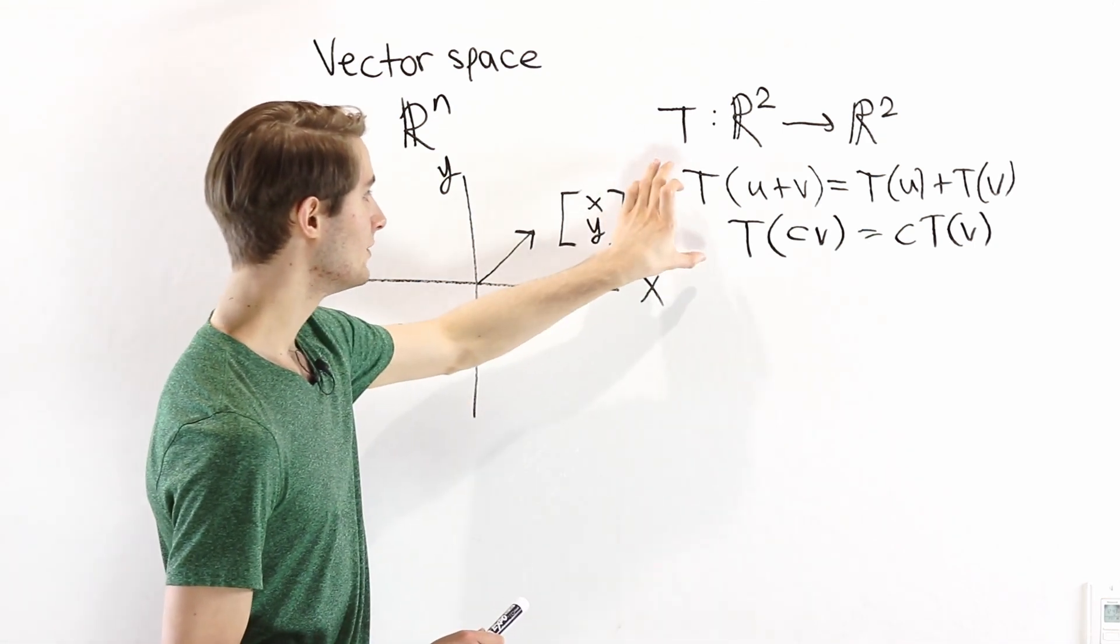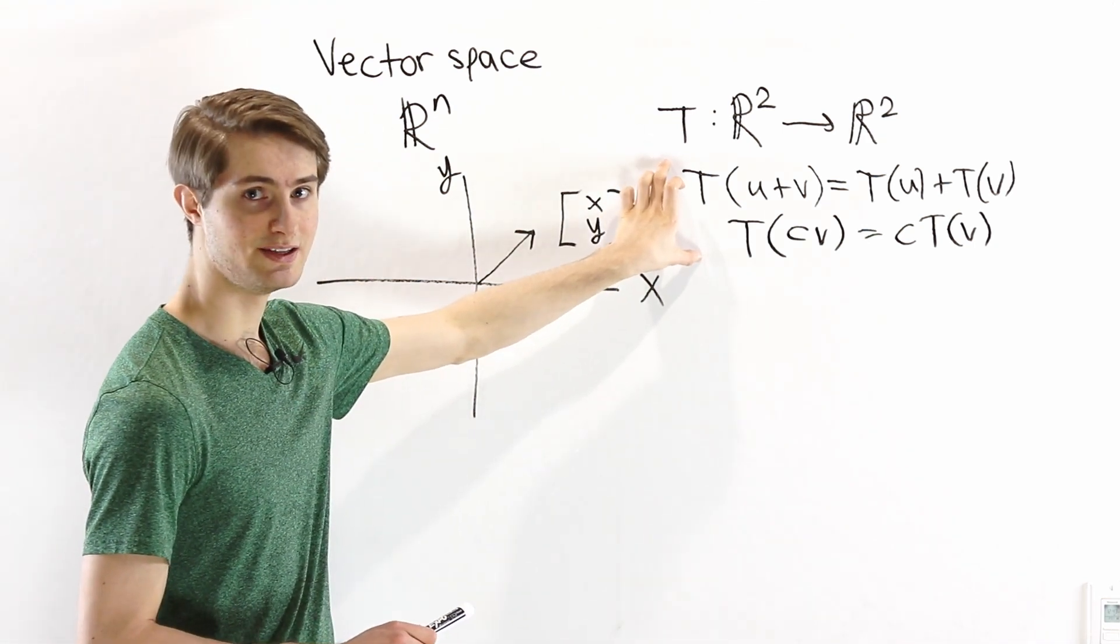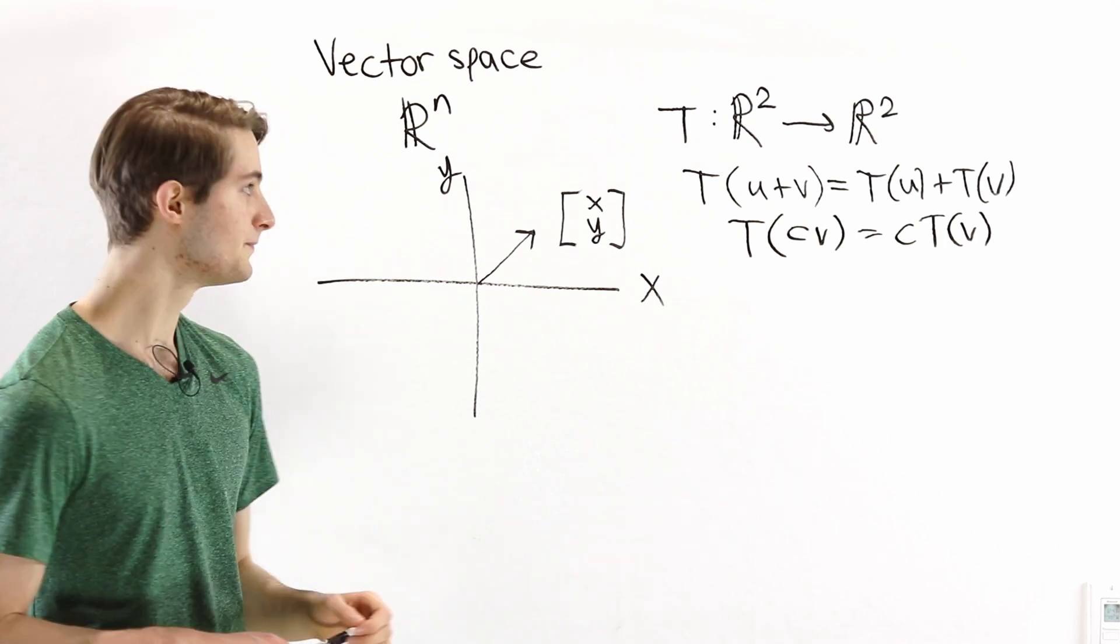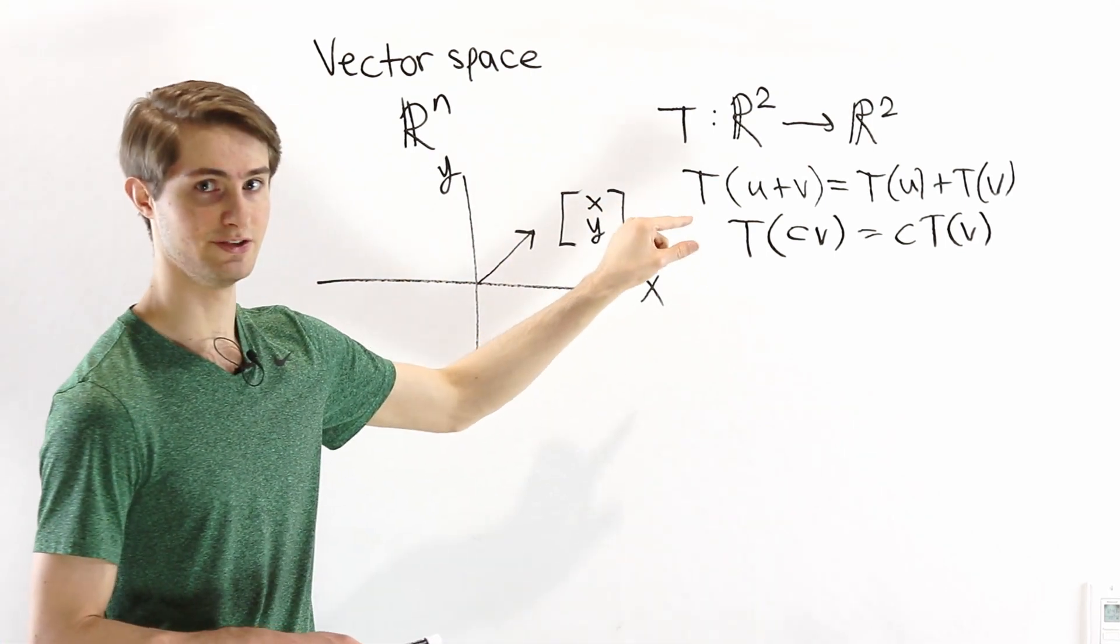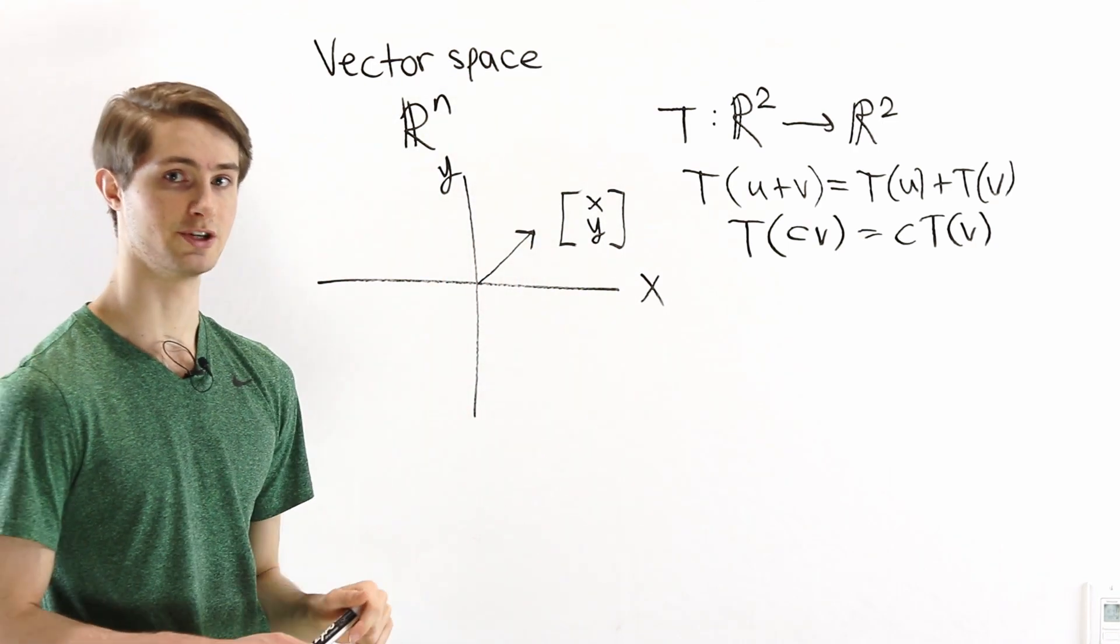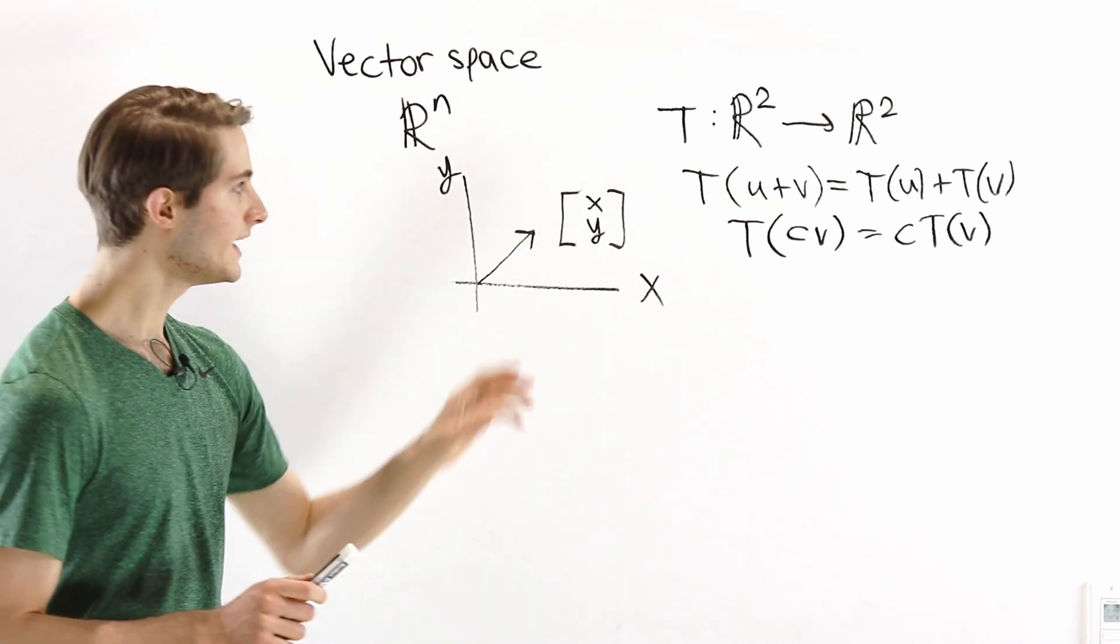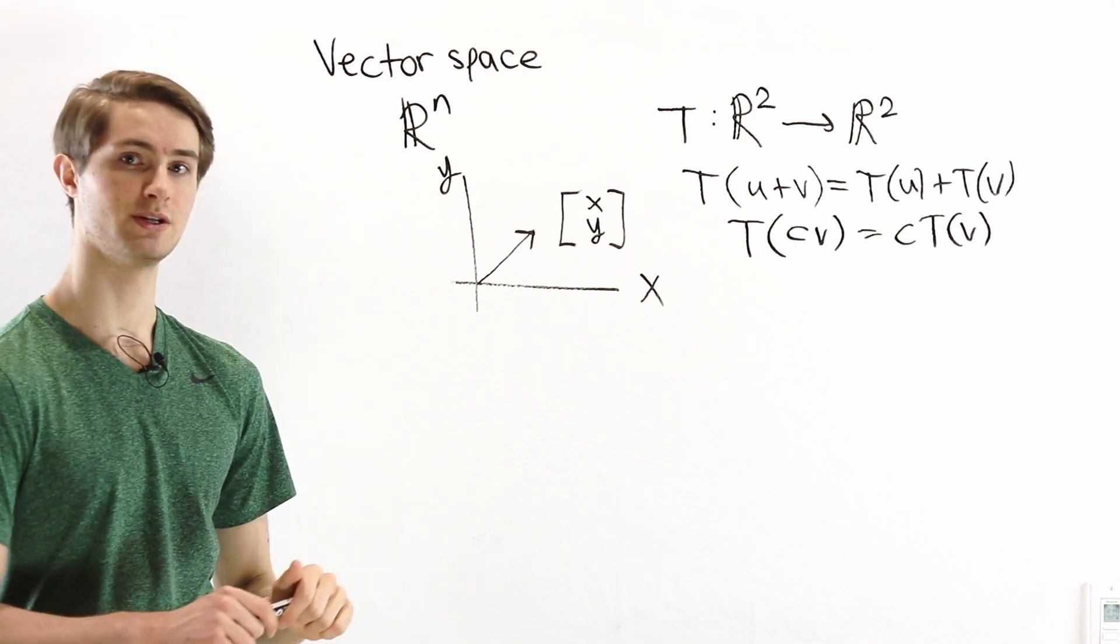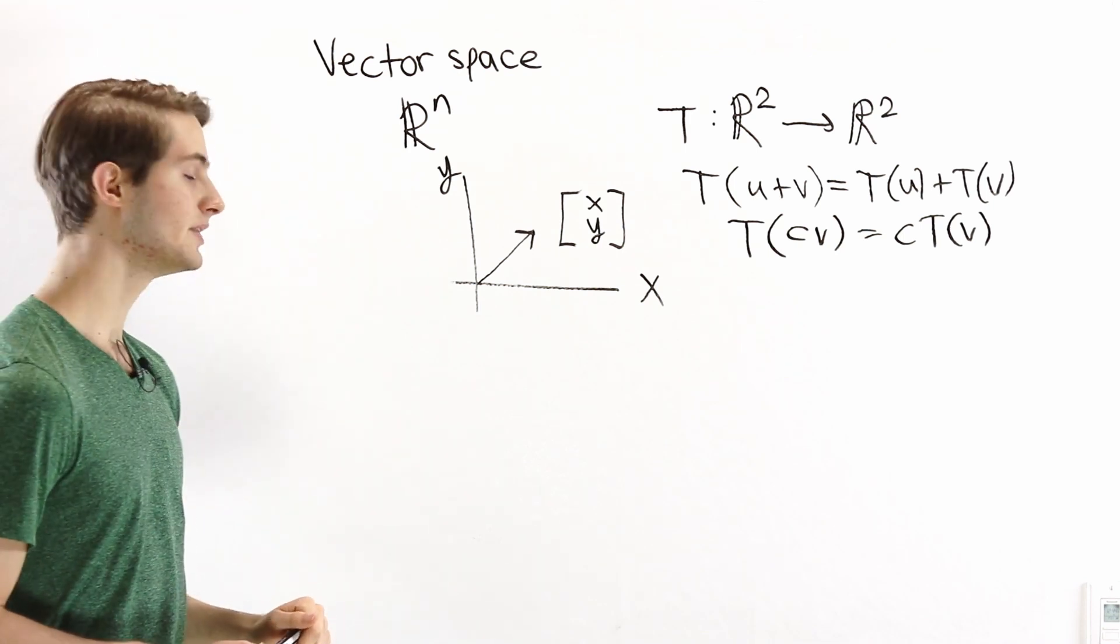Now it turns out that the functions that satisfy these conditions, those are called linear transformations, there aren't that many of these. This gives us a very specific type of function. So let's think about why these conditions give us so much information about the function T.